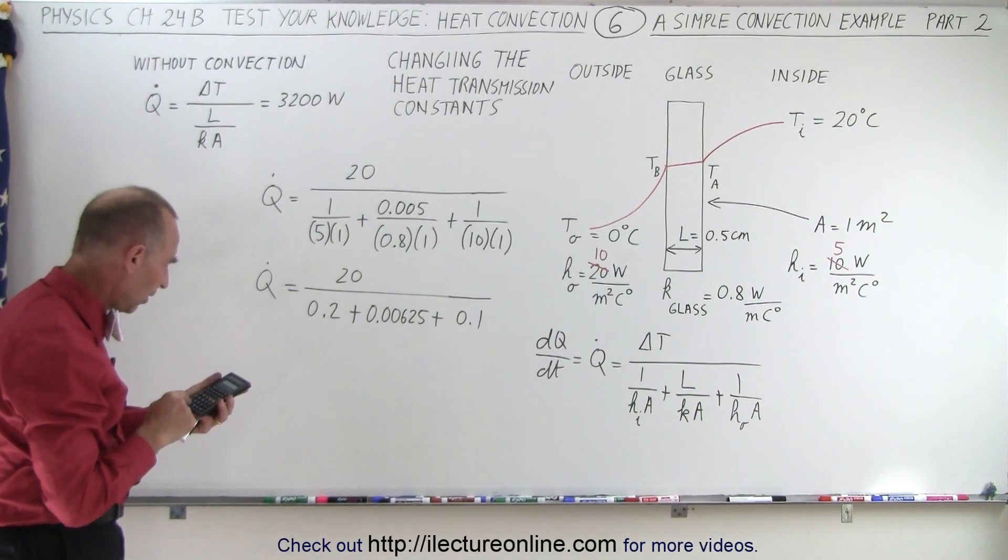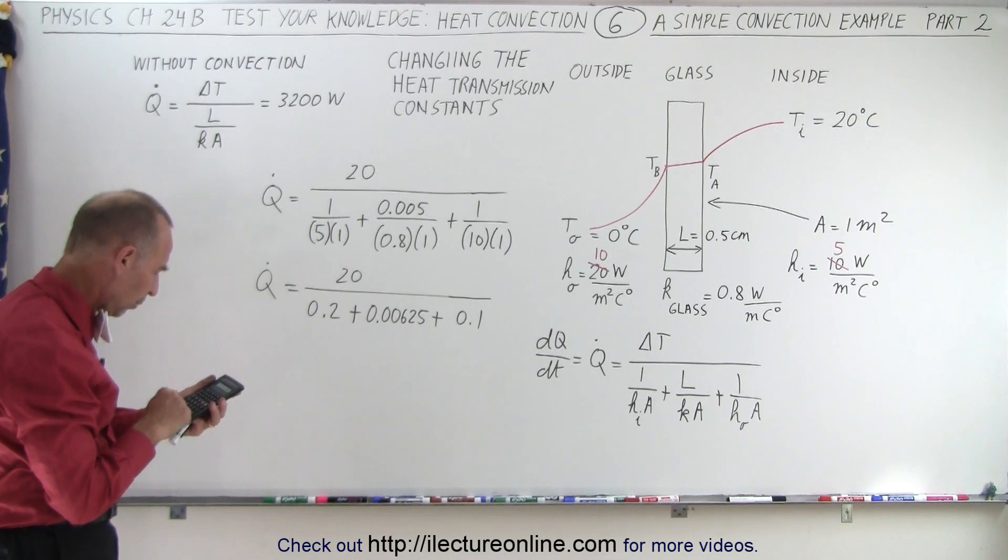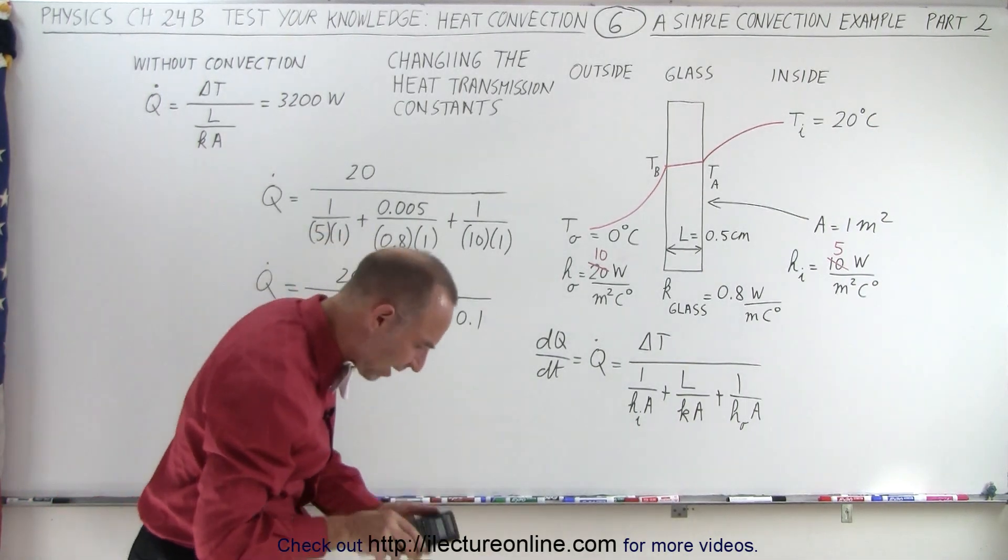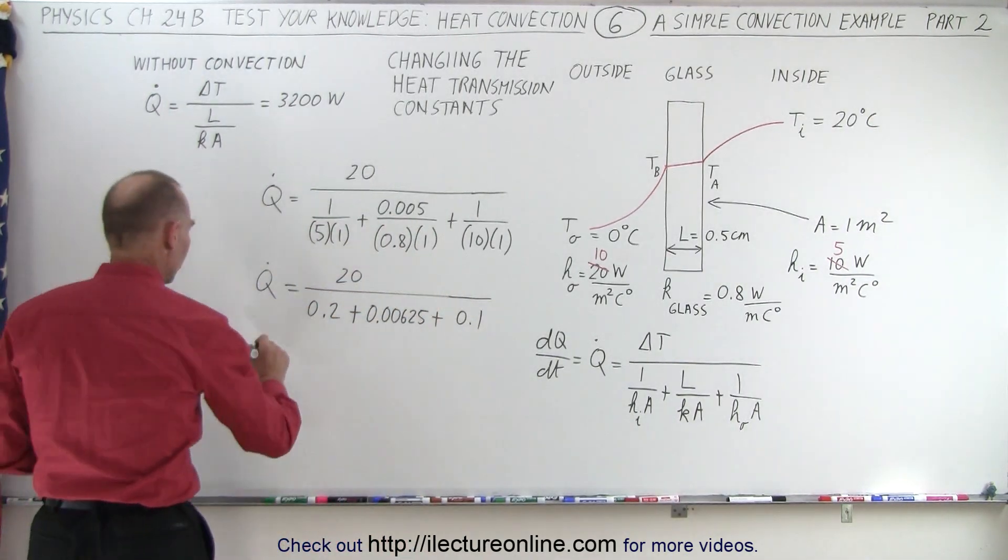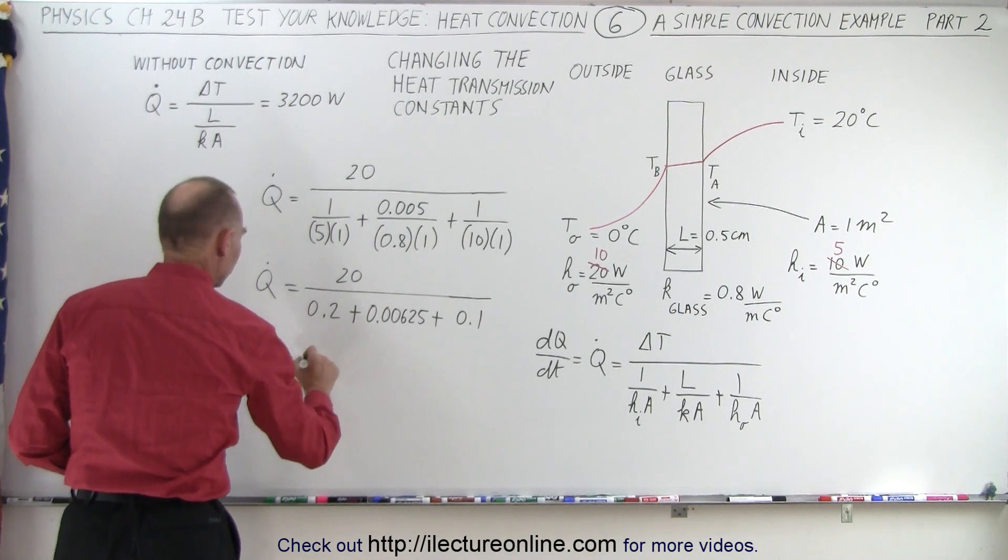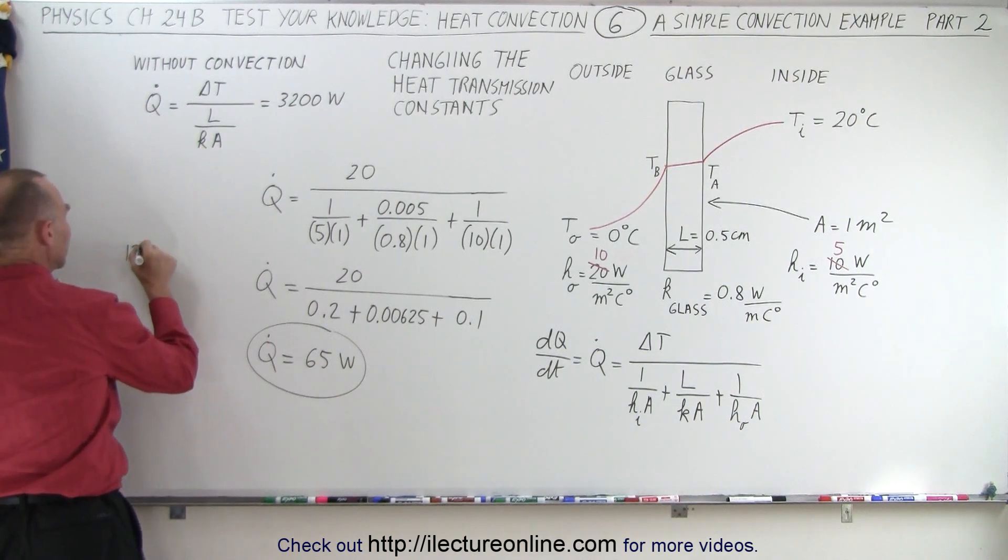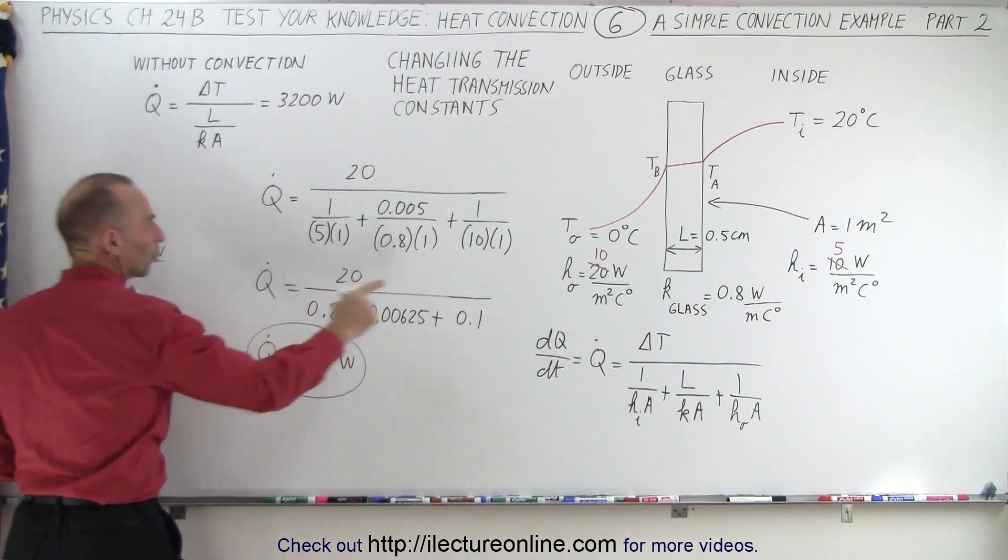So that'll give us 0.3 plus 0.00625, take the inverse, and multiply times 20, and we get 65, round that off. So Q dot is equal to 65 watts, and that was compared to 128 watts when the values were doubled.